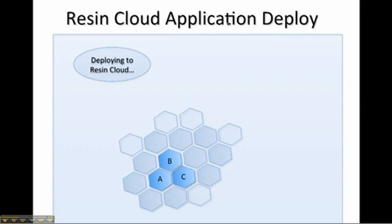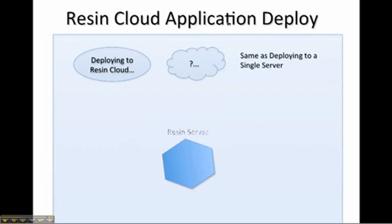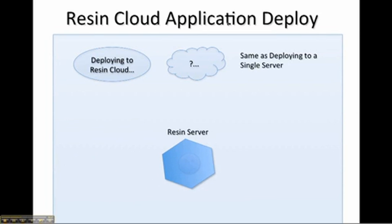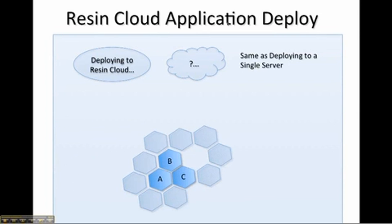Resin has built-in support for remote deployment via REST, web admin, and command line tools. Resin manages graceful versioning, rollbacks, staging, and promotions. Once you deploy an app to a triad server, that app first gets replicated to the other 2 members in the triad and then it gets replicated to every server in the pod.